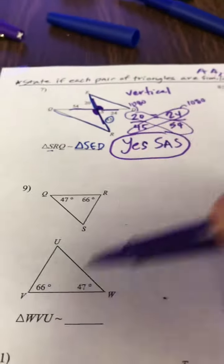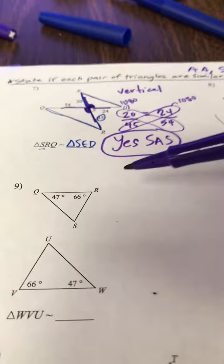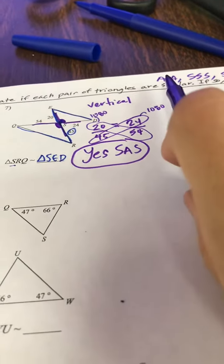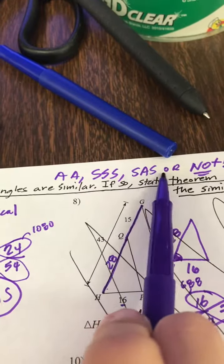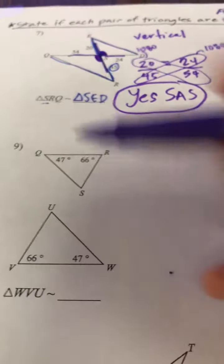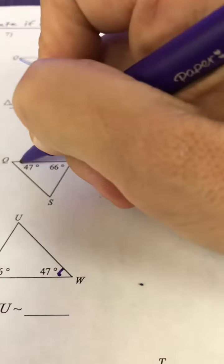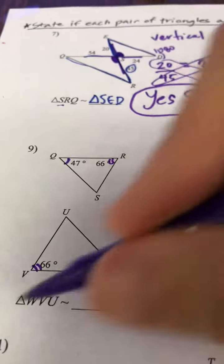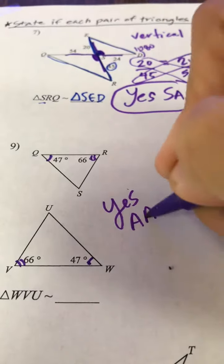Next. I don't see any side evidence. So if this is going to be similar, it's probably only going to be because of angle angle. Because I don't have any side information, just angle information. So let's take a look. 47 and 47 match. 66 and 66 match. So that's yes, angle angle similarity.